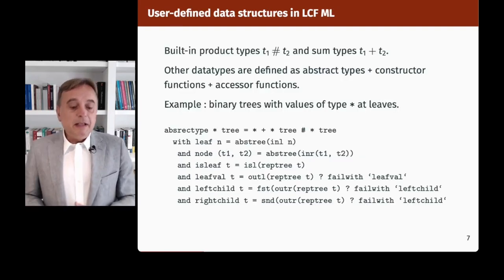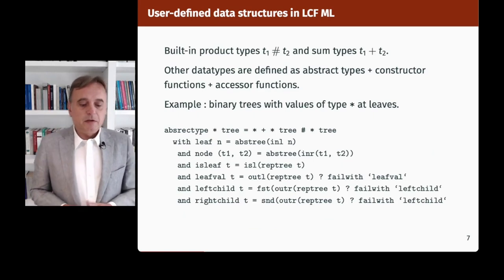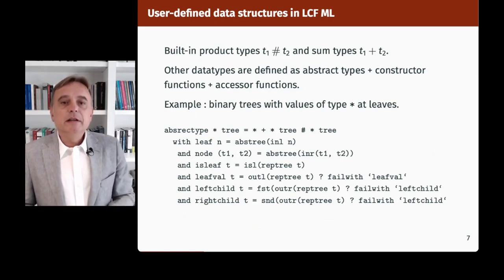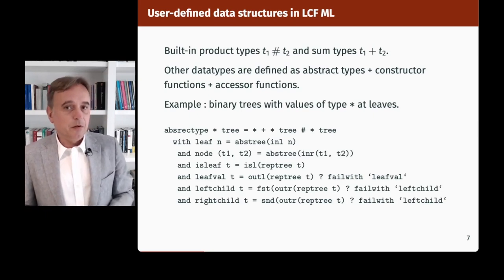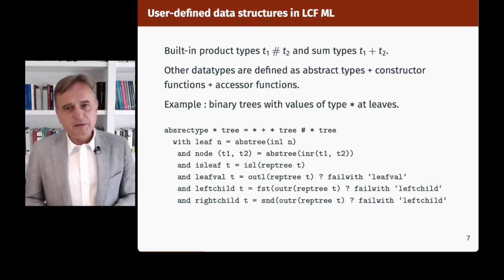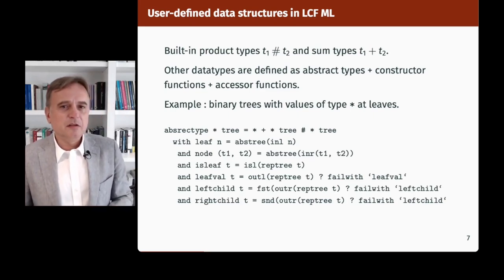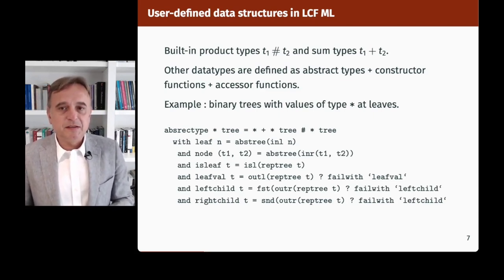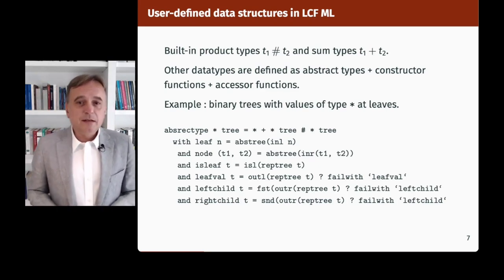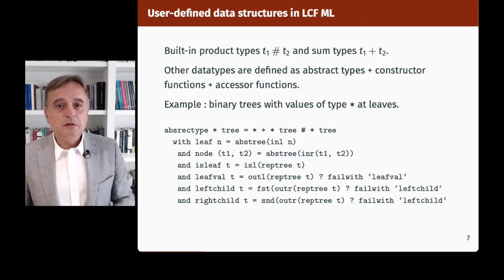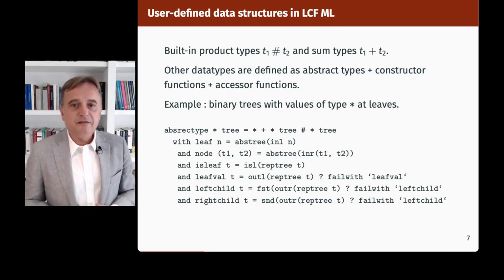That was really the beginning of ML. But one thing was still missing: support for user-defined data structures. In LCF ML there are built-in product types and sum types, but all other data types are defined as abstract types plus constructor functions plus accessor functions. For instance, binary trees with values of type star — the tree is either a leaf or a pair of two subtrees — with constructor functions leaf and node, a predicate is_leaf, and projection functions leaf_val, left_child, right_child, that can all fail at runtime.